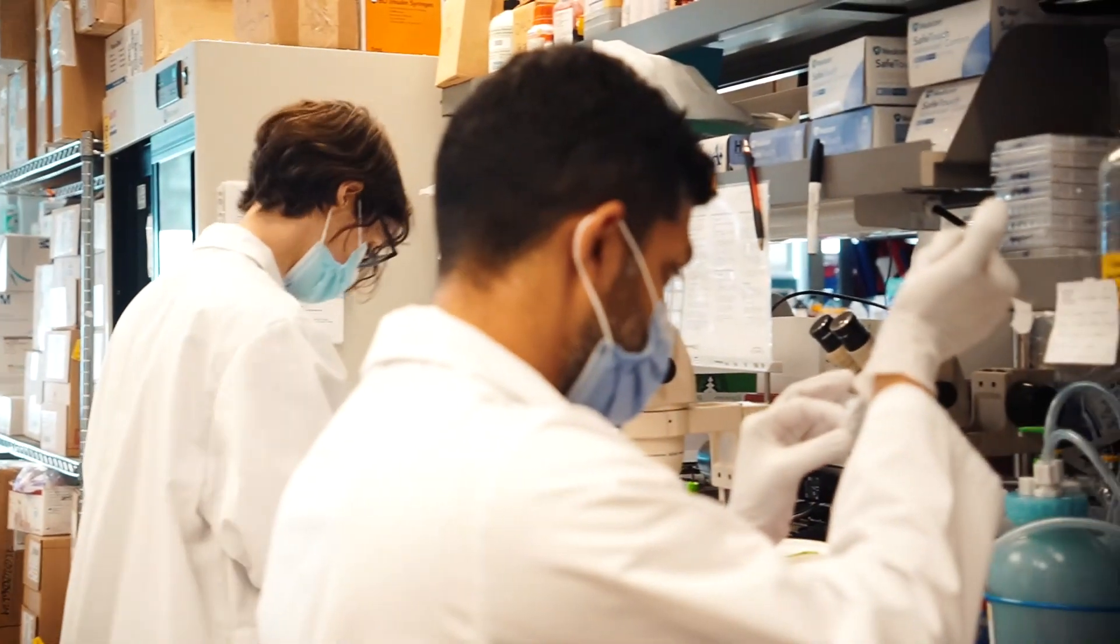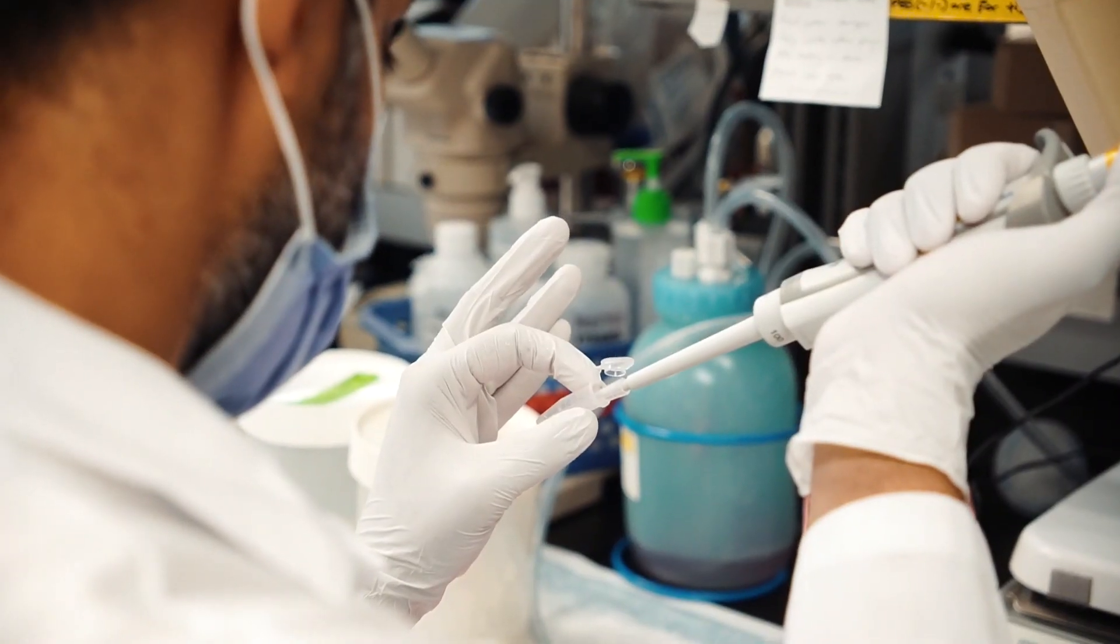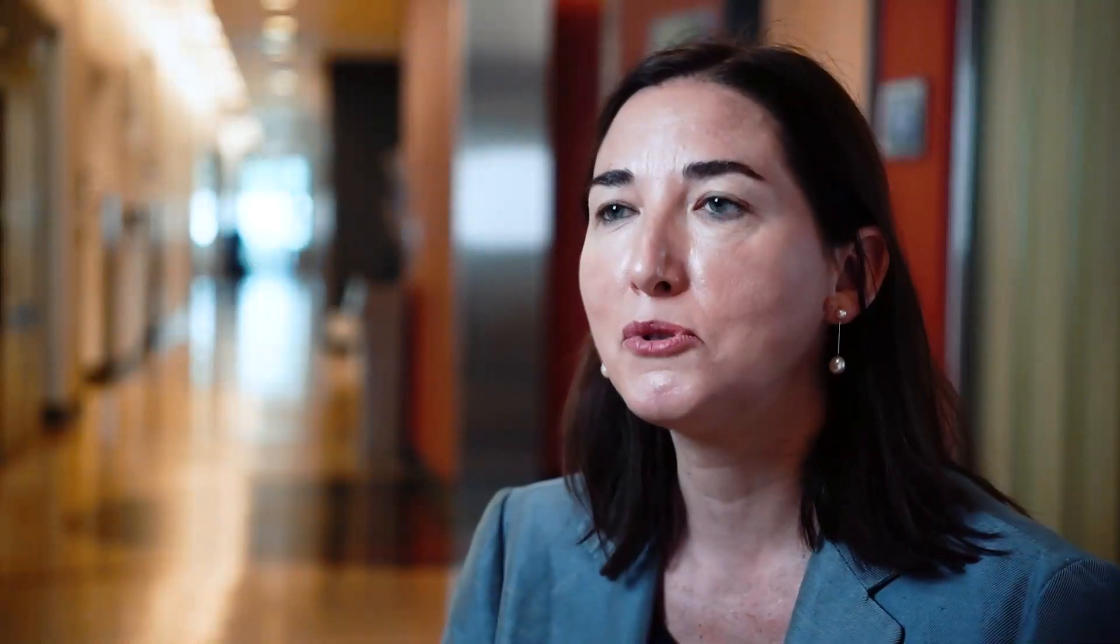We identified a particular marker that is expressed by these cells. What we were able to show in 2017 was that the cells purified with this marker were able to make beta cells in the petri dish.